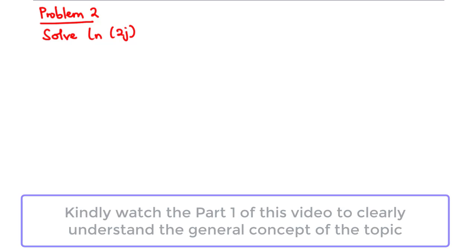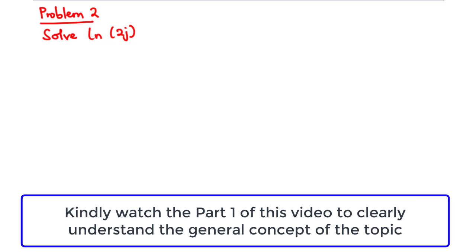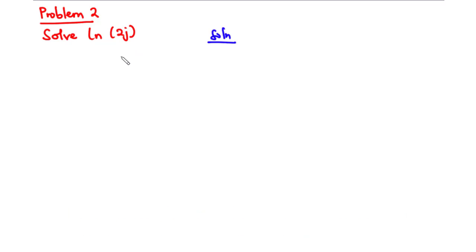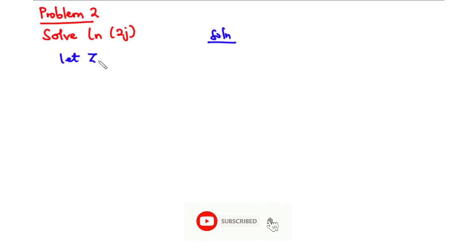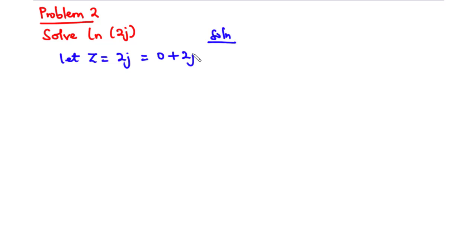Now, Problem 2. We are going to solve ln of 2j — specifically, we are going to find the principal value of ln of 2j. Let z equal 2j, which is also equal to 0 plus 2j.